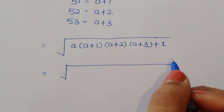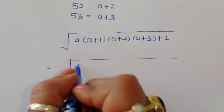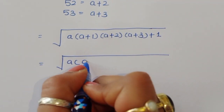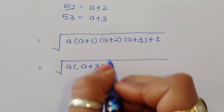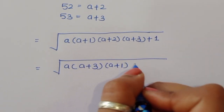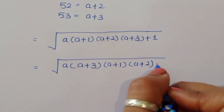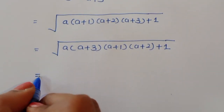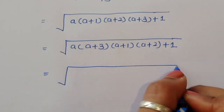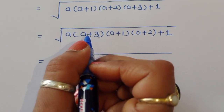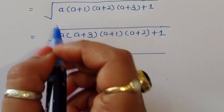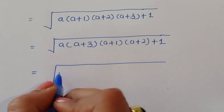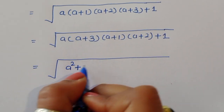Now we do some rearrangement. We can write this as a times (a+3), and then (a+1) times (a+2), plus 1. Expanding a times (a+3) gives a squared plus 3a.